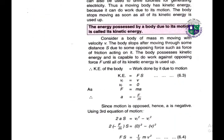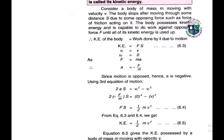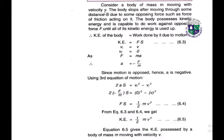To derive the formula for kinetic energy: consider a body of mass m moving with velocity v. The body stops after moving through some distance s due to an opposing force such as friction. The kinetic energy of the body equals the work done by it due to its motion, so KE = F × s. Using Newton's second law, F = ma, so acceleration a = −F/m (negative because motion is opposed).